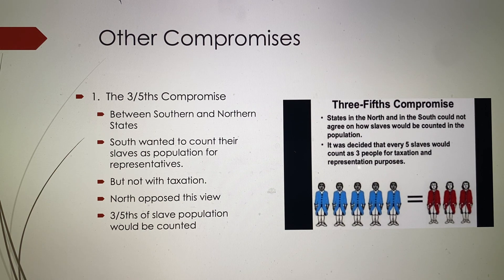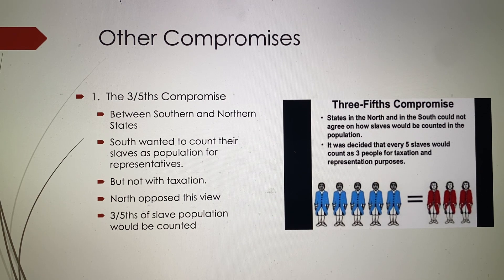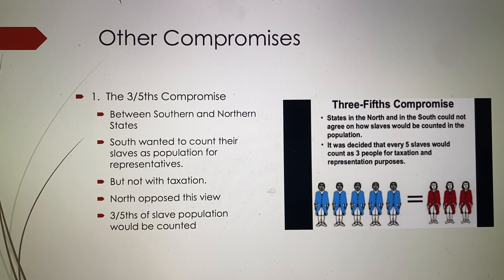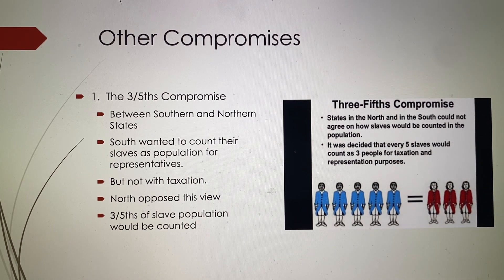The north opposed this view, saying you're counting people that are not citizens. So they had to compromise. It was decided that five slaves would count as three people — three-fifths of the slave population would be counted — both for taxation and for giving representatives to Congress based on population.